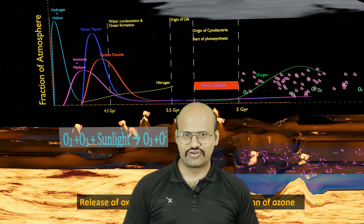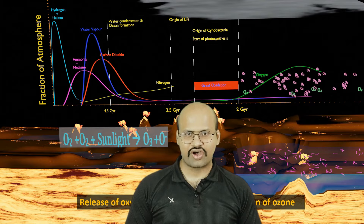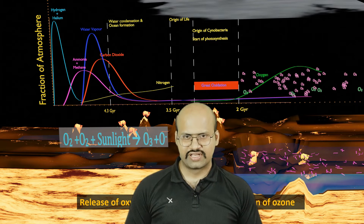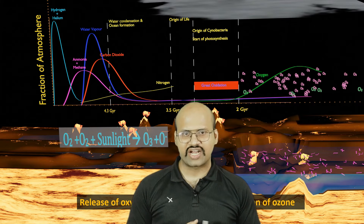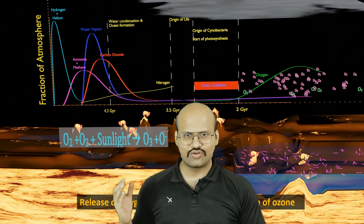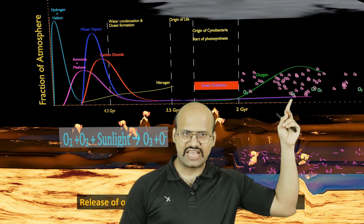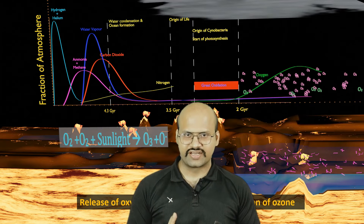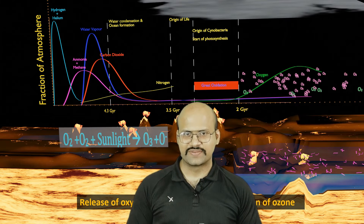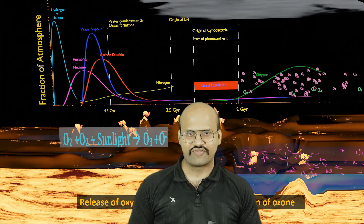Formation of the ozone layer was a very important step for the existence of life on land, because without the ozone layer, ultraviolet light would reach our Earth and any organisms trying to live on land would die. Because a layer of ozone was created, it protected living organisms from ultraviolet light, thus enabling life on land.